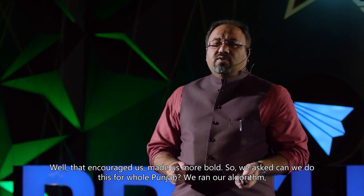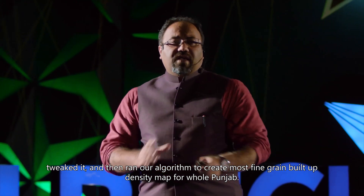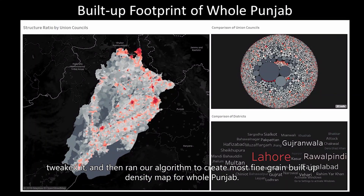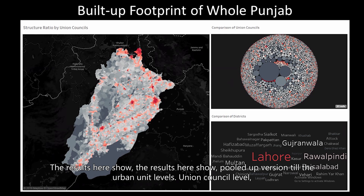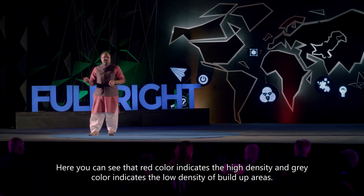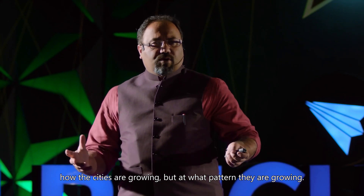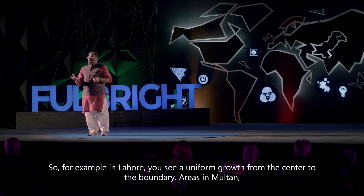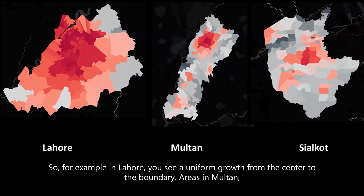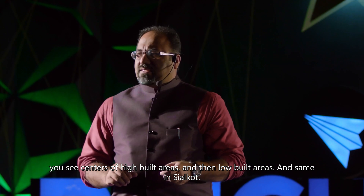That encouraged us further, so we asked: can we do this for the whole of Punjab? We tweaked and ran our algorithm to create the most fine-grained built-up density map for the entire Punjab, aggregated to the union council level. Red color indicates high density and gray indicates low density of built-up areas. This tells you not only how districts and cities are growing, but at what pattern — for example, Lahore shows uniform growth from the center outward, while Multan shows centers of high built-up areas surrounded by low ones.